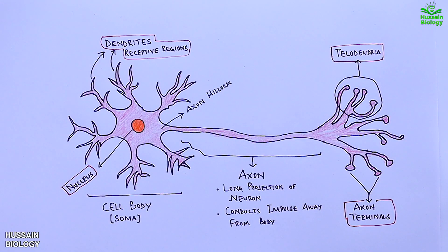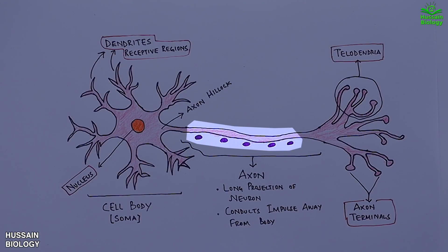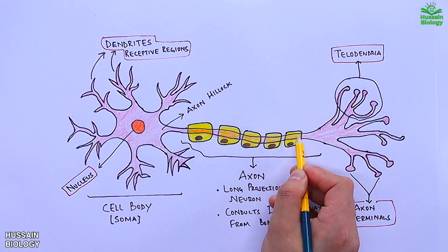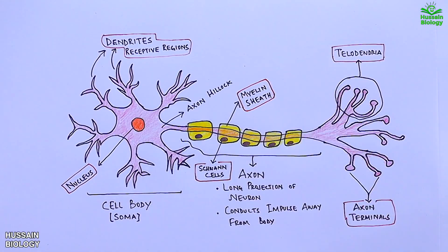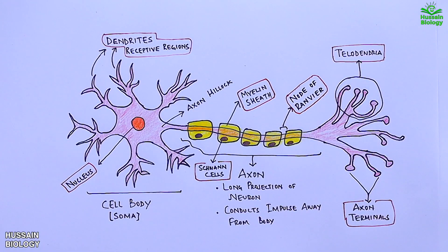The type of neuron shown in this diagram is termed a non-myelinated neuron since there is no myelination on the axon. Looking further into neuron structure, we see Schwann cells present on the axon of the nerve cell. These Schwann cells secrete myelin in layers around the axon, forming the myelin sheath. It must be noted that myelination around the axon is discontinuous, and the gap between segments of myelin sheath is termed the node of Ranvier.